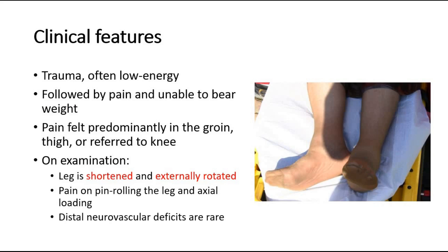For clinical features, the leading symptom is trauma, often low energy, which is followed by pain and an inability to weight bear. Pain is felt predominantly in the groin, thigh, or, commonly in the elderly, referred to the knee. On examination, the leg is characteristically shortened and externally rotated, due to the pull of the short external rotators, with pain on pin rolling the leg and axial loading.